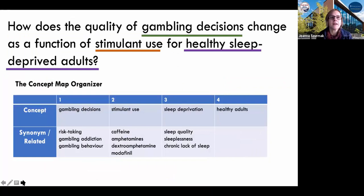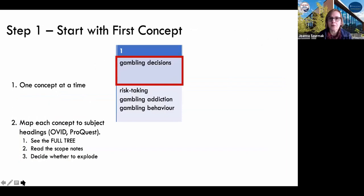This example follows this question: How does the quality of gambling decisions change as a function of stimulant use for healthy sleep deprived adults? We've got our concept map organizer and we see our four concepts: gambling decisions, stimulant use, sleep deprivation, and healthy adults. Let's start mapping them. We start with the first one, with gambling decisions. We're not going to be using PsycInfo ProQuest because we want to see how PubMed will map this automatically. You will see that the database itself uses this strategy to come up with as broad a search as it can.